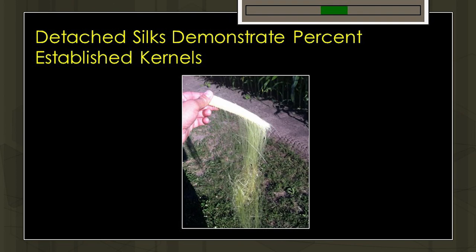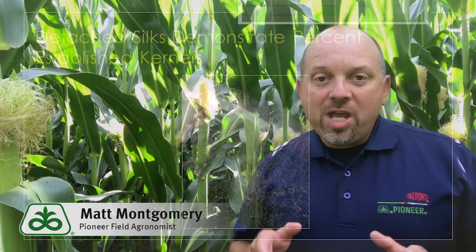Once the kernel is established and the ovule has been fertilized, we'll see that silk pinch off within a few to several hours of that occurring. That becomes a great way for us to gauge the progress of ear development — how many kernels do we actually have established on this plant?